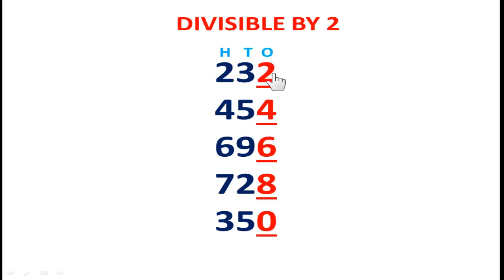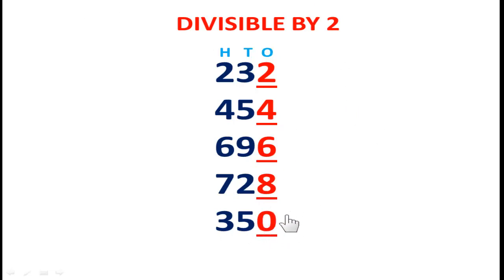So from this we can conclude: 232 has ones place digit 2, 454 has ones place digit 4, 696 has ones place digit 6, 728 has ones place digit 8, and 350 has ones place digit 0. By looking at the ones place digit only, we can determine if a number is divisible by 2. The divisibility rule of 2: if any number has 2, 4, 6, 8, or 0 in the ones place, the total number is divisible by 2.